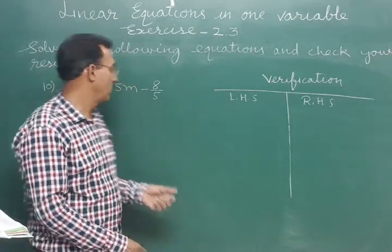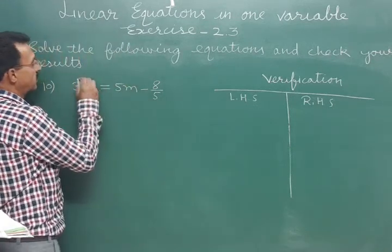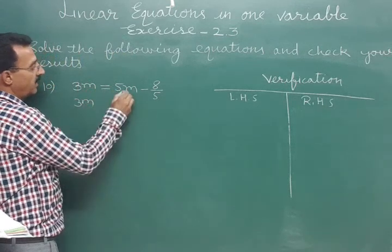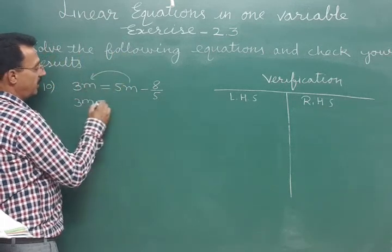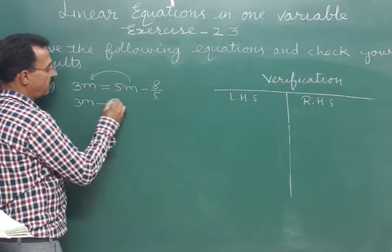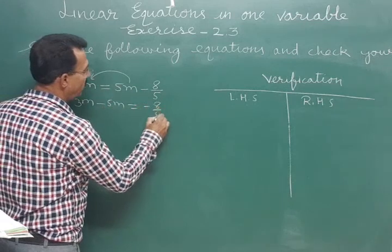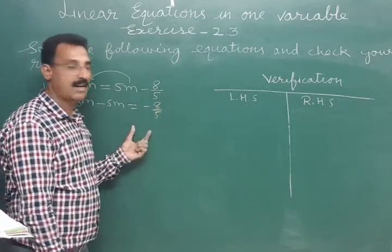So variable, this is a variable here, this is a variable here. As we do, this variable shift to the left side. So it becomes 3m minus 5m is equal to minus 8 upon 5. The constant stays on the right side.